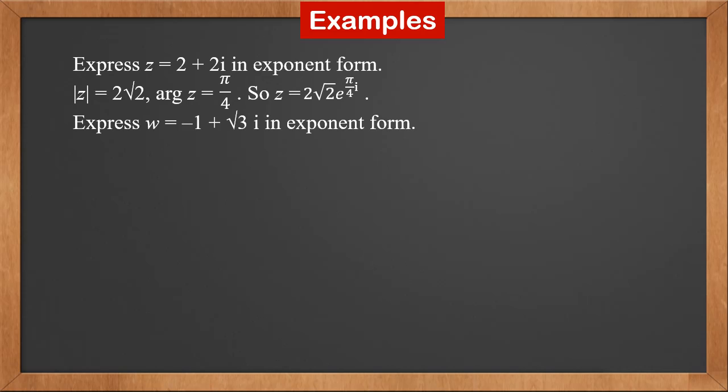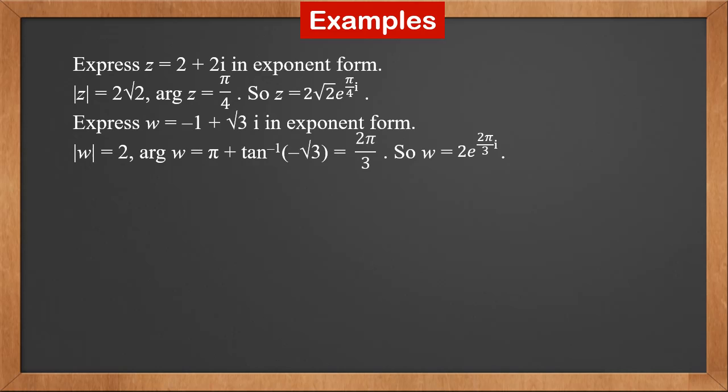Express minus 1 plus root 3 i in exponential form. W's modulus is 2. W is in the second quadrant, so its argument is pi plus inverse tan of minus root 3, which is 2 thirds pi. So the exponential form is 2 times e to the power of 2 thirds pi i.